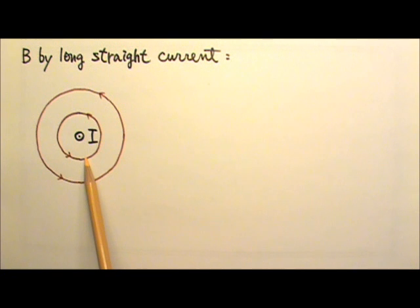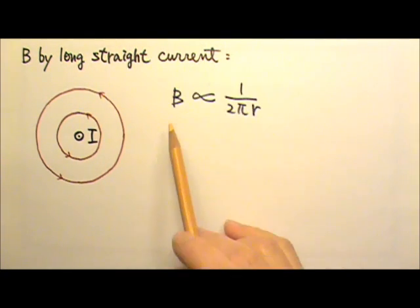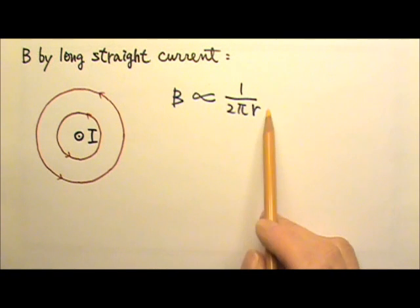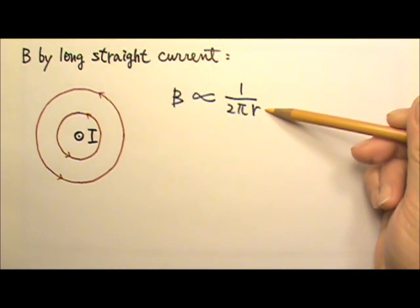The closer we are to the current, the stronger the magnetic field. Because the closer we are to the current, the smaller the circle the magnetic strength has to be spread onto. The farther away the weaker the field because the strength has to be spread out onto a bigger circle. So the magnetic field must be proportional to 1 over 2 pi r, the strength divided by the circumference 2 pi r.